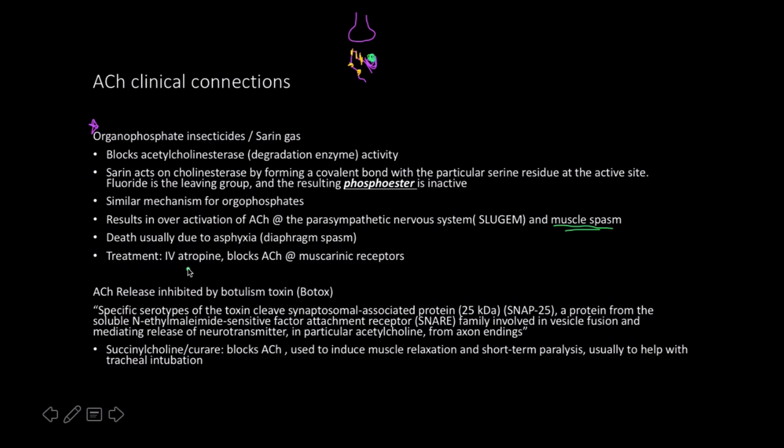The treatment is intravenous atropine, given until the patient is considered atropinized. Depending on the level of exposure, you may be giving atropine the entire time. We've moved toward using gene therapies and vectors to genetically modify plants to fight off insects, but organophosphate insecticides are still used in certain parts of the world.